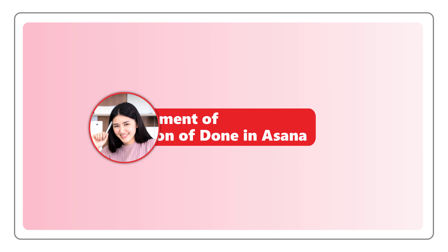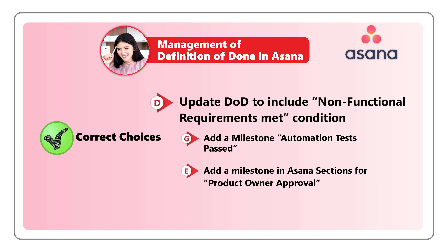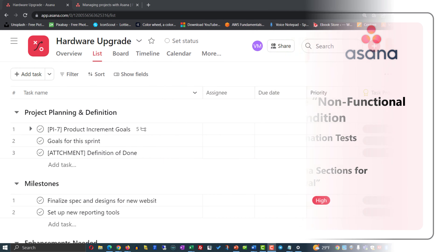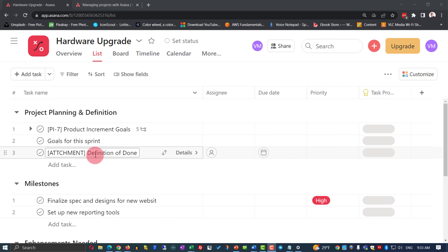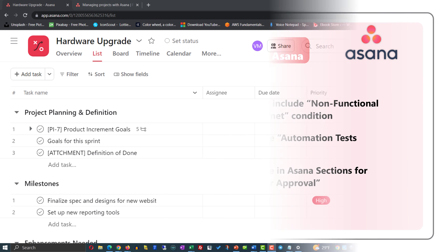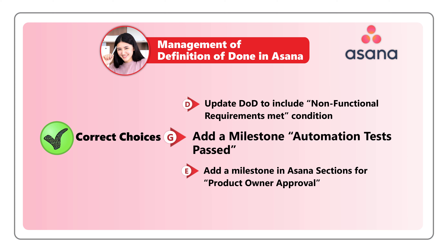So how can management of definition of done be accomplished in Asana? If you need to use Choice D and update definition of done to include non-functional requirements met condition, you might decide to make changes in the project planning and definition sections inside Asana. This section consists of product increment goals, goals for the sprint, as well as an attachment — probably a Microsoft Word file — with the definition of done. To add an additional requirement to the definition of done list, you would add a new item in the list. In a very similar way, you can implement Choice G — add a requirement for automation tests passed.